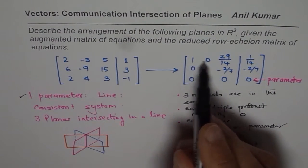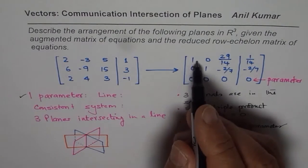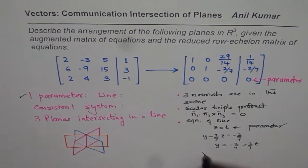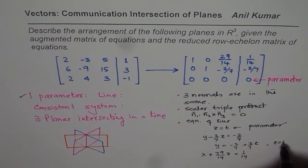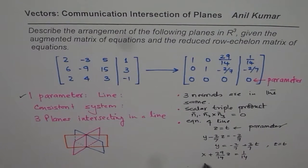For X we can solve from here. From this equation we can write X plus 29/14 Z, and Z is T, so we substitute that. Then X equals 1/14 minus 29/14 T.